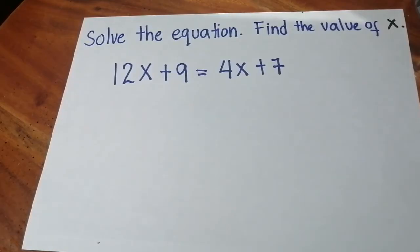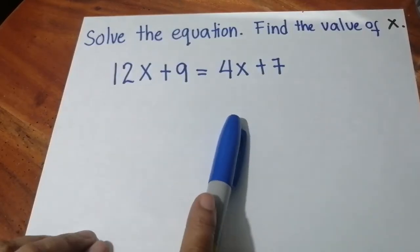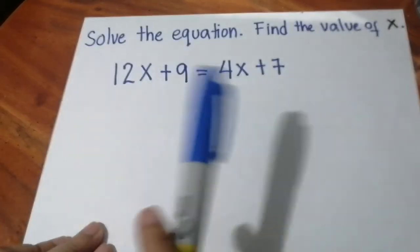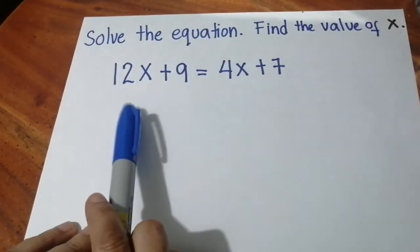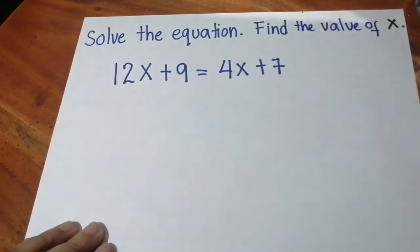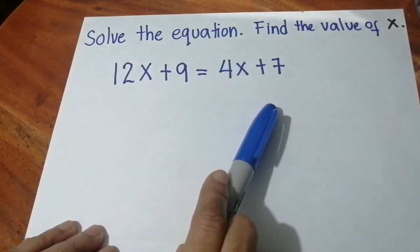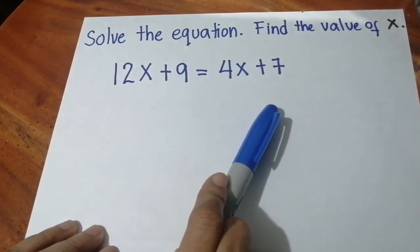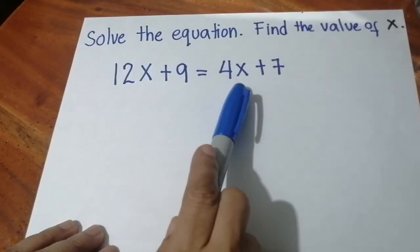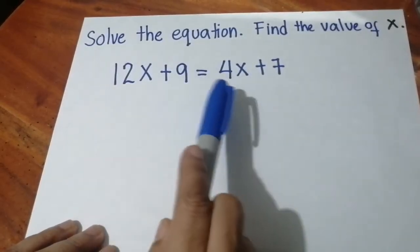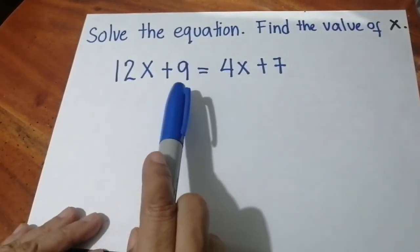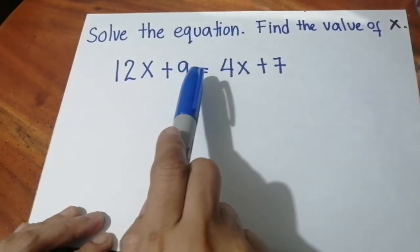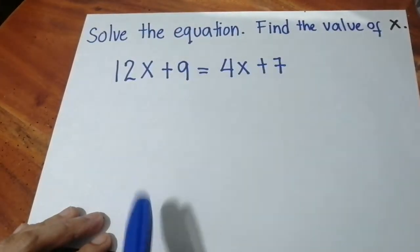Today I will be discussing solving linear equations and finding the value of x when there are x terms on both sides. The first thing you need to do if you have this kind of equation is to put the x terms on the same side, and place the constants on the other side.